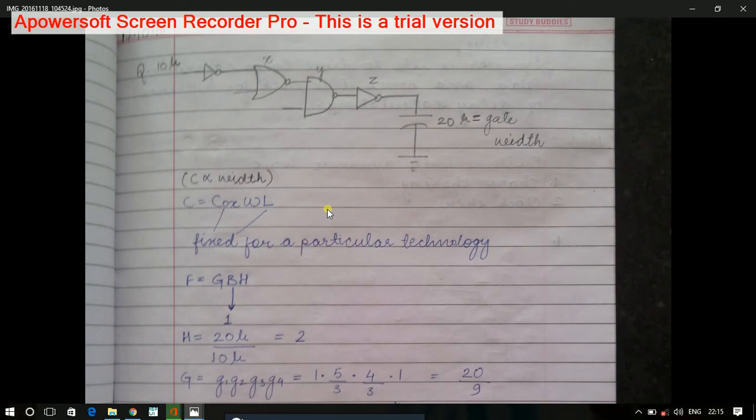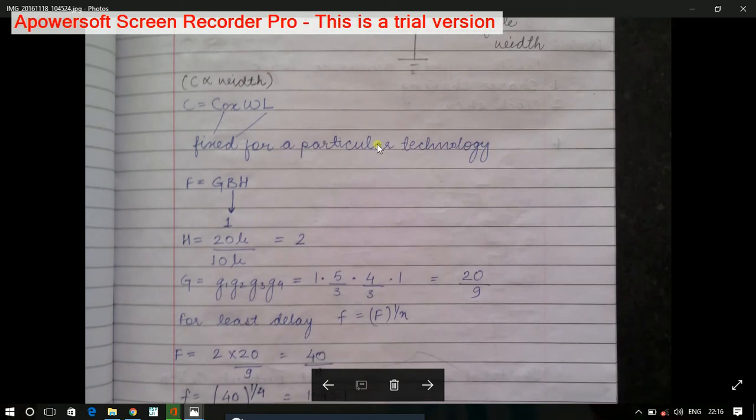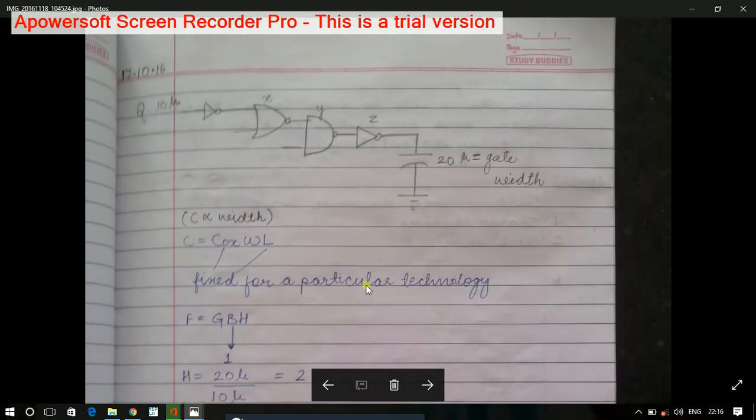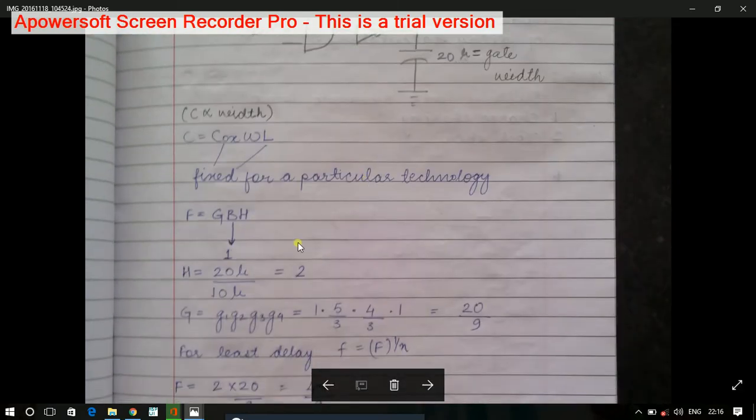Electrical effort H is nothing but C_out upon C_in. In this case, what is the value of C_out? C_out is 20, and the value of C_in is 10. So H is 2.